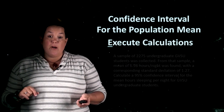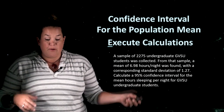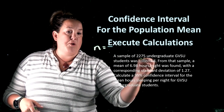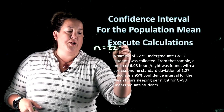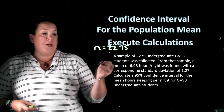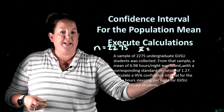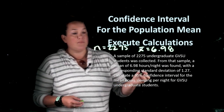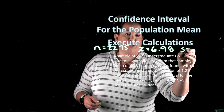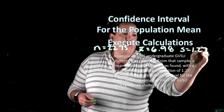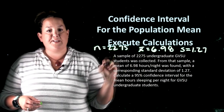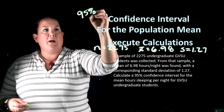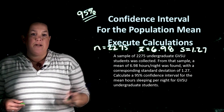Now we Execute calculations. From the problem description we need: the sample size n = 2,275; x-bar, the sample mean, which is 6.98; and s, the sample standard deviation, which is 1.27. We also need to remember our confidence level, which is 95%. We'll need all of these values to execute our calculations.